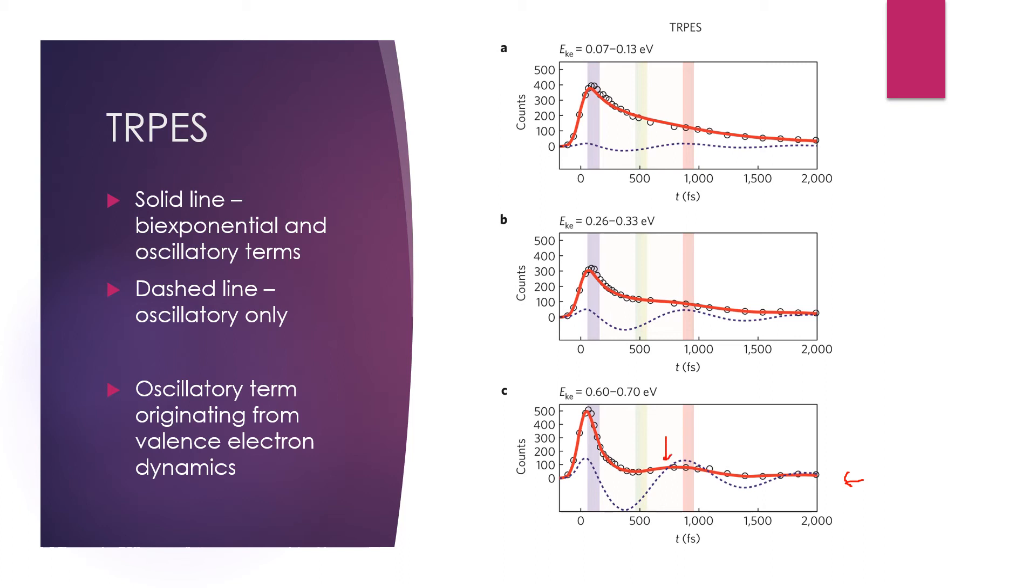At different energy ranges, the cation state that the emission of the photoelectron leaves behind, which governs the photoionization matrix elements, has different vibrational character.